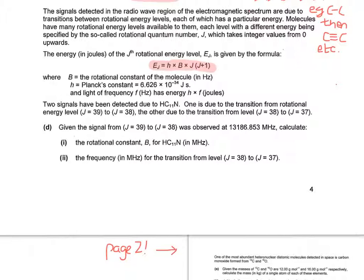The signals detected in the radio wave region of the electromagnetic spectrum are due to transitions between rotational energy levels, each of which has a particular energy. The molecules have many rotational energy levels available to them, each level with a different energy being specified by the so-called rotational quantum number, which takes integer values from zero upwards. The energy of the j-th rotational energy level is given by this formula: Ej = h × B × j(j+1).